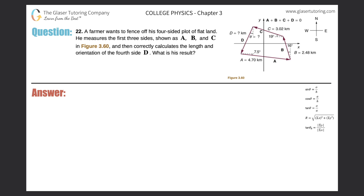Number 22. A farmer wants to fence off his four-sided plot of flat land. He measured the first three sides as shown — A, B, and C in figure 3.60 — and then correctly calculates the length and orientation of the fourth side D. What is his result? So basically what this question is asking, if we look at the picture, find vector D — its orientation and the magnitude of it.